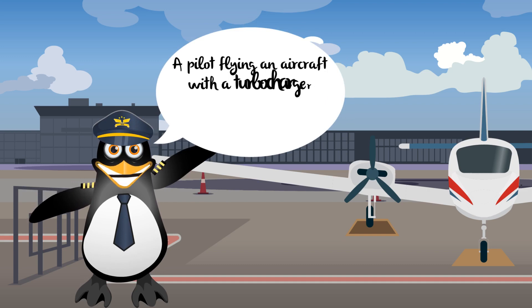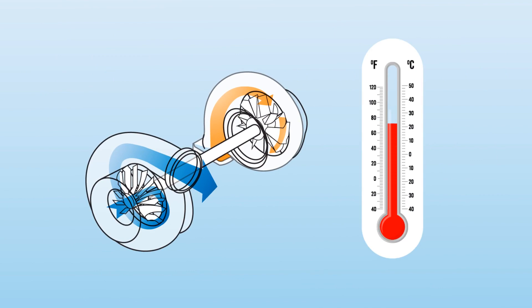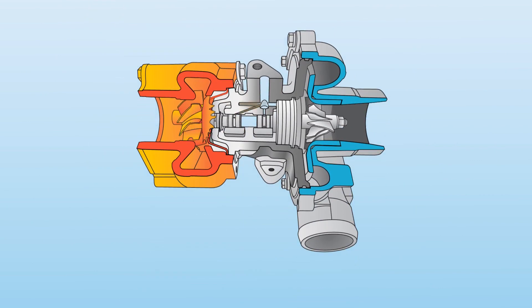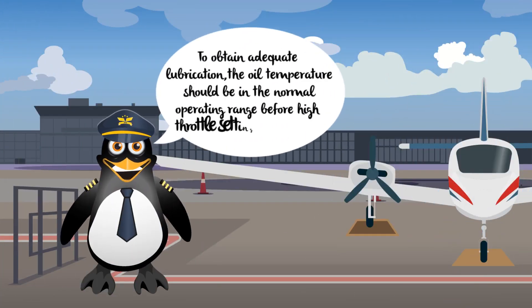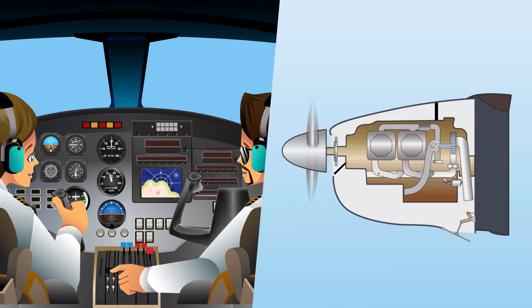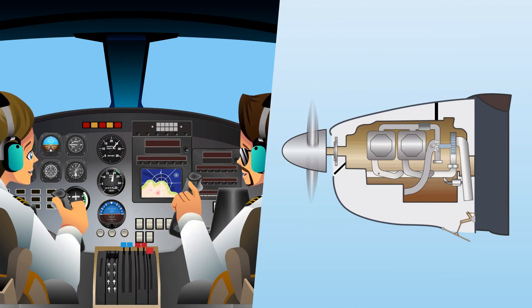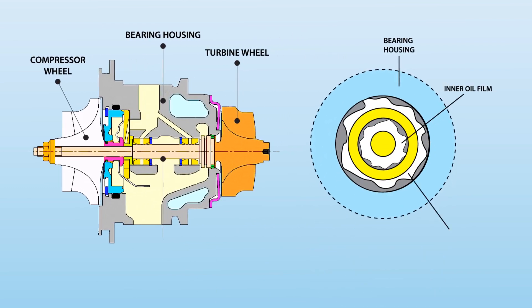A pilot flying an aircraft with a turbocharger should be aware of system limitations. A turbocharger can operate at high rotational speeds while at high temperatures. To achieve high rotational speeds, the bearings within the system must be constantly supplied with engine oil to reduce the frictional forces at high temperature. To obtain adequate lubrication, the oil temperature should be in the normal operating range before high-throttle settings are applied. In addition, the pilot should allow the turbocharger to cool and the turbine to slow down before engine shutdown. Otherwise, the oil remaining in the bearing housing will boil and cause hard carbon deposits to form on the bearings and shafts, which will rapidly deteriorate the turbocharger's efficiency and service life.